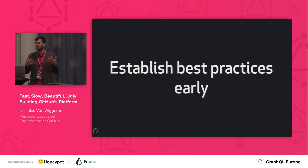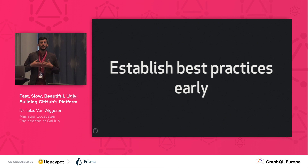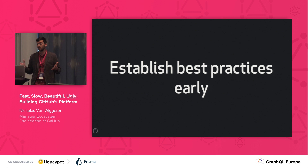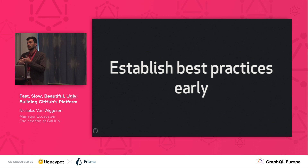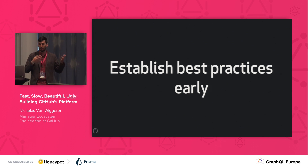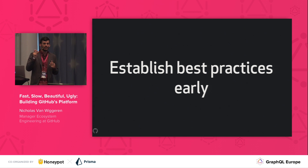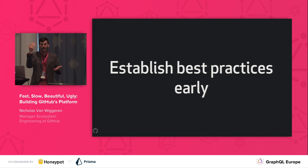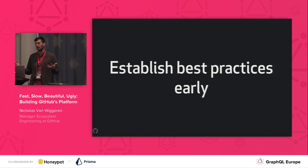This brings me to one of my biggest points about the troubles we hit and what we decided to do to fix them: establish best practices early. When you've got 200 developers all building on the same GraphQL API and trying to produce something cohesive, make it as hard as possible to do the wrong thing. We have linters that check for breaking changes to make sure people can't ship them to the public, and linters that check for improper use of Booleans and warn about nullability issues.